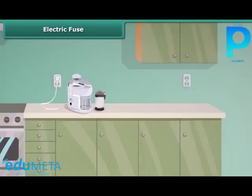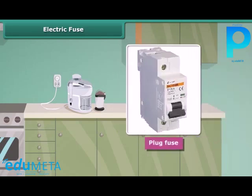Fuses of different kinds are used for different purposes. A plug fuse is used in our houses. The plug fuse consists of two parts: the porcelain casing and the porcelain grip. This fuse has a thin wire of tin and lead alloy which has a low melting point. A cartridge fuse is generally used in electrical appliances.